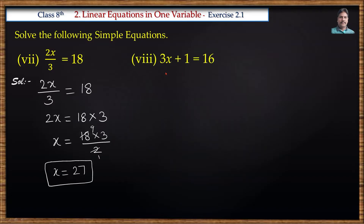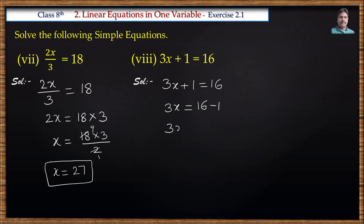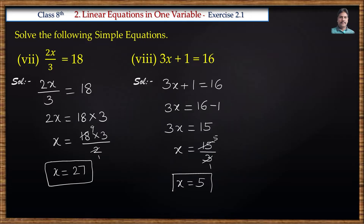Next problem: 3x plus 1 is equal to 16. We transpose plus 1 to the right side, it becomes minus 1: 3x is equal to 16 minus 1, which is 15. Then we divide the right side by 3: x is equal to 15 by 3. 3 fives are 15, so x is equal to 5.